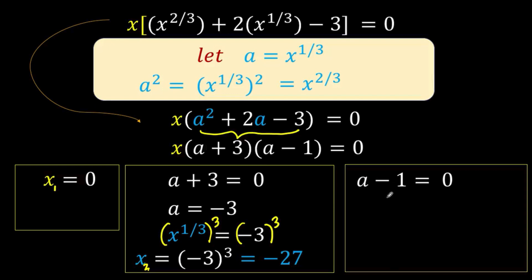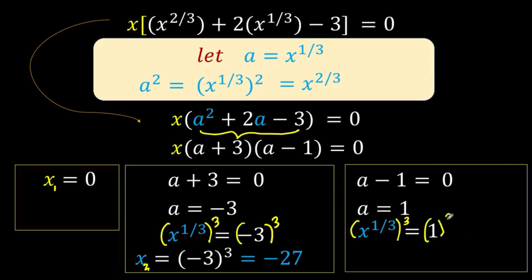Now for the third equation, a minus 1 equals 0: adding 1 to both sides gives a equals 1. We replace a with x raised to 1 third, then raise both sides to the third power to simplify the left side to x. And 1 cubed equals 1, so our third solution is x equals 1. So we have three answers: x equals 0, x equals negative 27, and x equals positive 1.